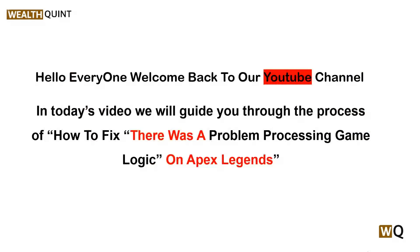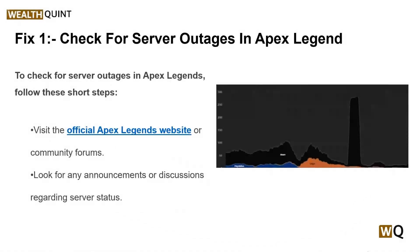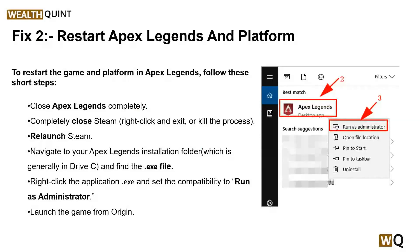To fix that issue, you can follow these simple on-screen instructions. Solution one is to check for server outages in Apex Legends. Before attempting any troubleshooting steps, it's essential to check the status of the Apex Legends server services, as outages can often cause connectivity issues and lead to the processing game logic error. To check for server outages, visit the official Apex Legends website and look for any announcements regarding server status.